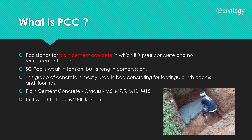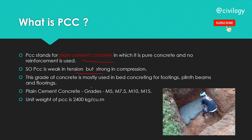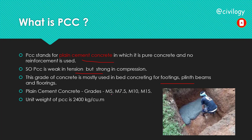Now our main topic — what is PCC? The name tells us: it is Plain Cement Concrete — it is pure concrete with no reinforcement used. That's why it is weak in tension and strong in compression. PCC is used in footings, plinth beams, and floorings. The grades mostly used in PCC are M5, M7.5, M10, and M15. The unit weight of PCC is 2400 kg per cubic meter.